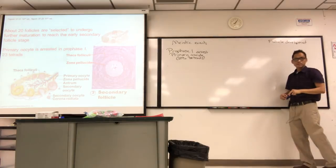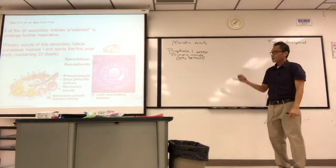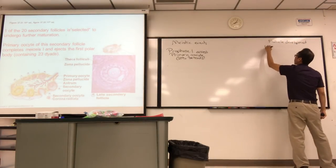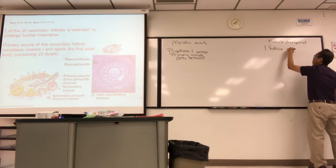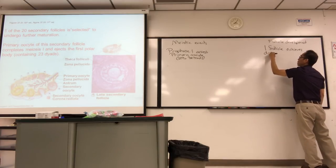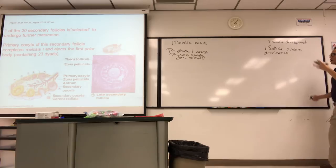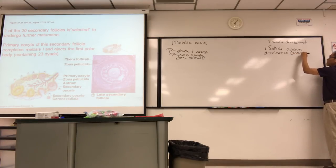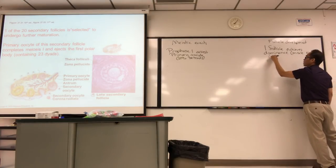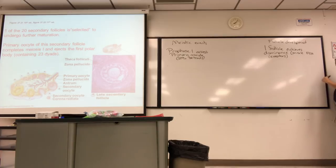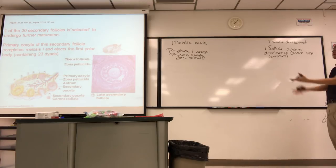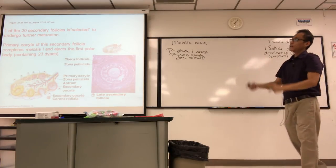One of those 20 will achieve dominance and proceed to a late secondary stage — it's like the winner. Maybe it's the one with the most FSH receptors. FSH is follicle-stimulating hormone, a gonadotropin secreted by the anterior pituitary. This is the one that will complete meiosis I and go on to become a Graafian follicle and ovulate. So this one follicle will break out of prophase I arrest.